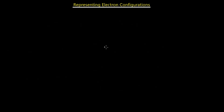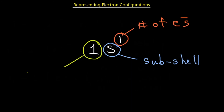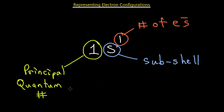Now let's talk about how we represent electron configurations. The notation works as follows: the number in front of the sub shell letter represents the principal quantum number — which shell we're referring to. The letter represents the sub shell involved, and the superscript number represents the number of electrons in that specific sub shell. Together, this gives the exact location of the electron we're describing.